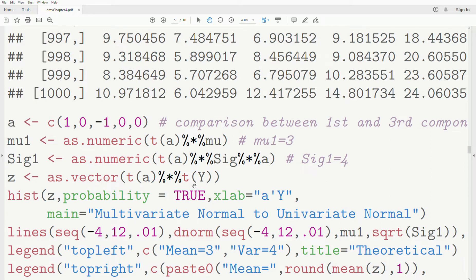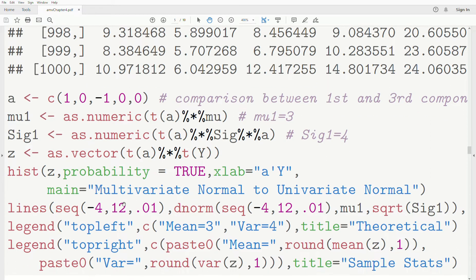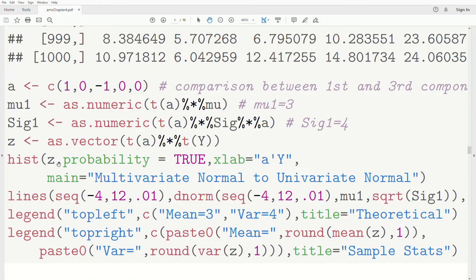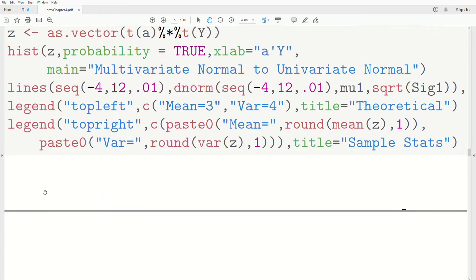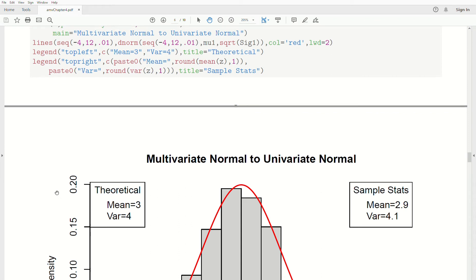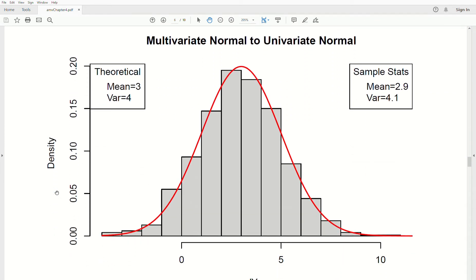Now the transformation, A transpose Y. The way R stores data in a data frame, the columns are the variables. But these transformations require the columns to be observations, so I just take the transpose. Now each row is a variable and each column is an observation. And so we create Z, so this is the transform. Then I create a histogram of Z to see if it's bell-shaped or multivariate normal. And then I plot the theoretical curve above it. And I have some legends. So let's see what we get here. So there's a histogram with the theoretical curve plotted on top of it, the red line. And so they are so close.